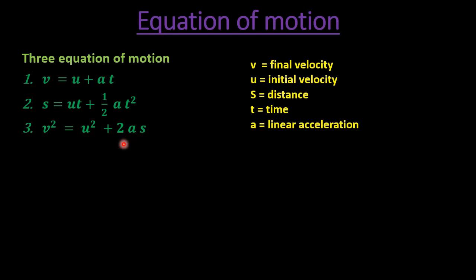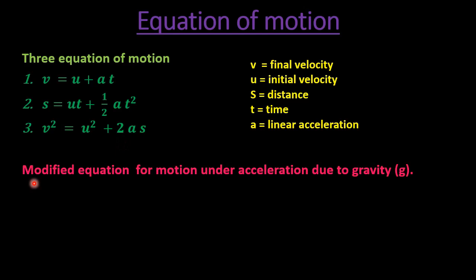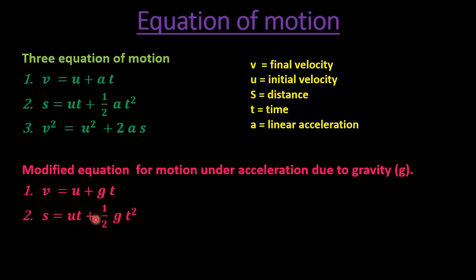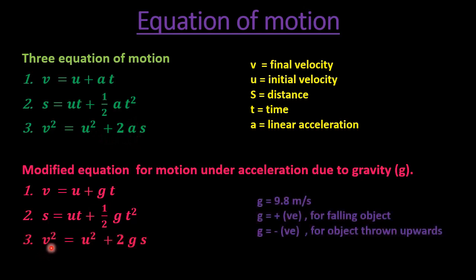We only need to modify the equations slightly. For motion under acceleration due to gravity, we replace the linear acceleration a with gravitational acceleration g. So the modified equations are: v = u + gt; s = ut + ½gt²; and v² = u² + 2gs. The only difference from the standard equations is that in free fall, we replace the acceleration a with acceleration due to gravity, denoted by small g.